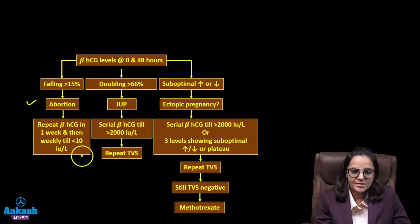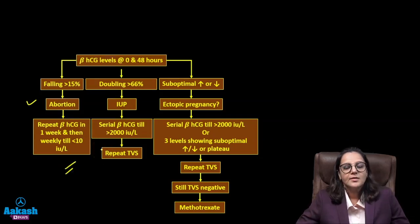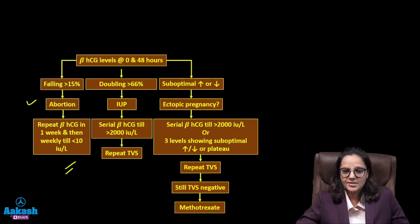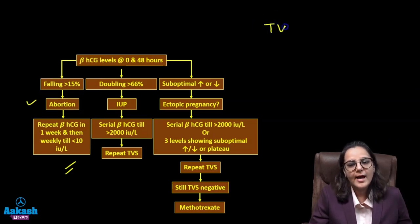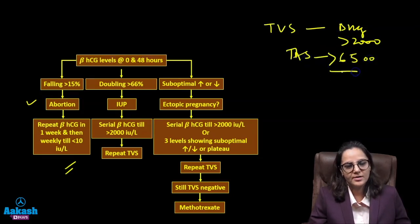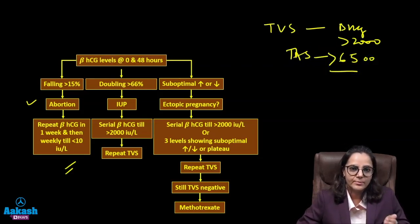If the beta-hCG has increased by more than 66% between Day 0 and Day 2, it is most likely an intrauterine pregnancy. Continue weekly beta-hCG monitoring until levels exceed 2000 IU/L — the discriminatory zone — at which point a gestational sac should be visible on transvaginal sonography. On transabdominal sonography, the discriminatory zone is above 6500 IU/L.